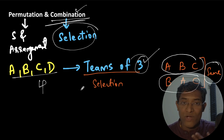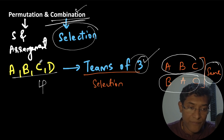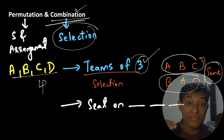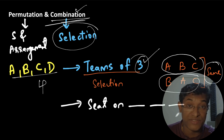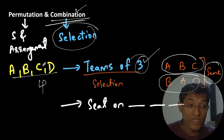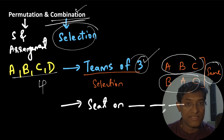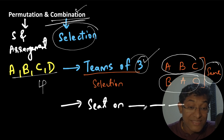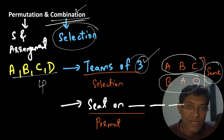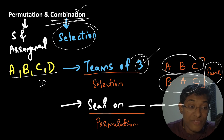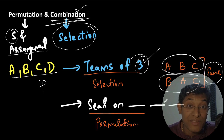Now what would be an example of permutation? Let's say we have these same four people, but now we want to seat three of them on three chairs arranged in a straight line. So we need to choose three people from the four and make them sit in these three positions. In this case, we would be using permutation — because we have to select three out of four people and arrange them in three positions.